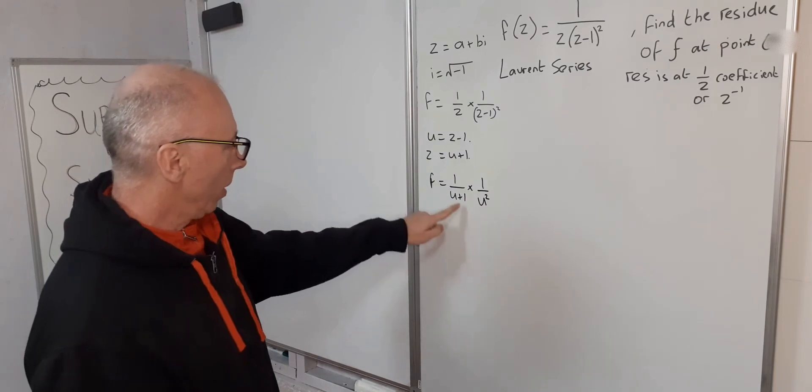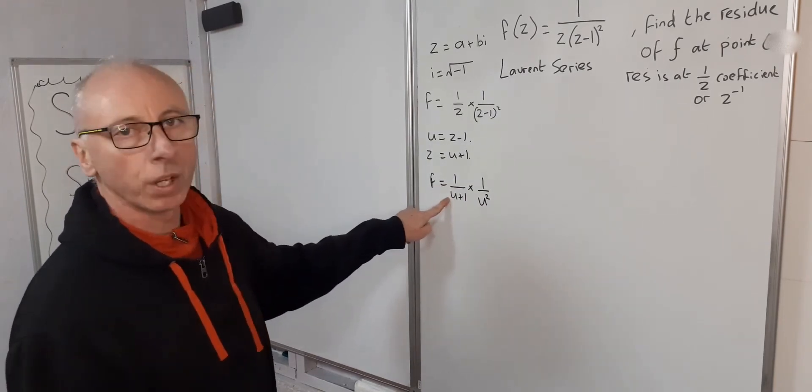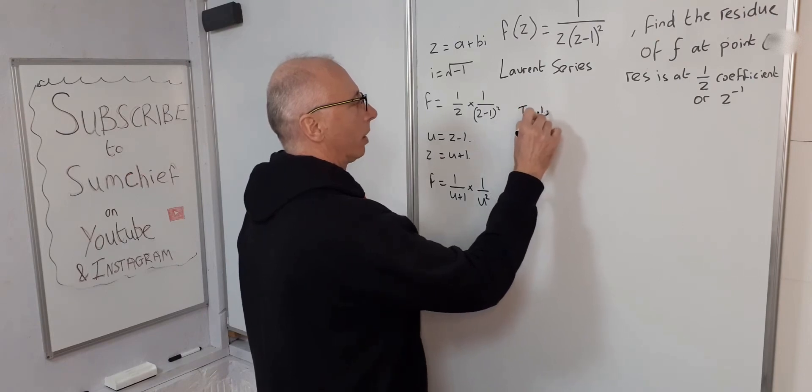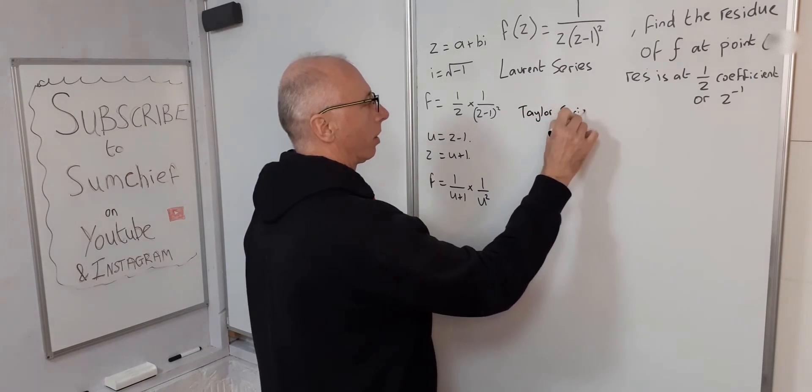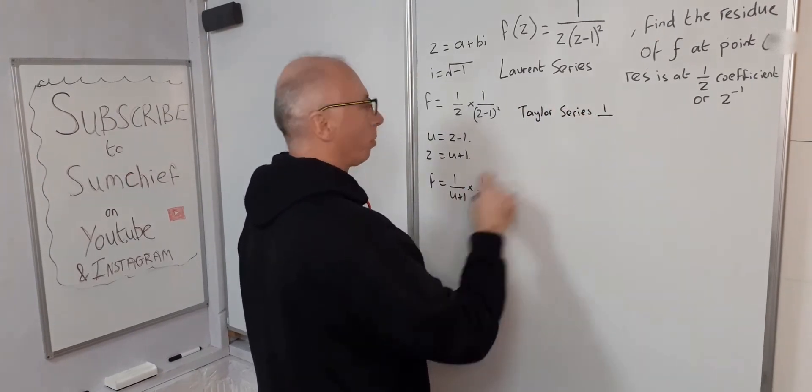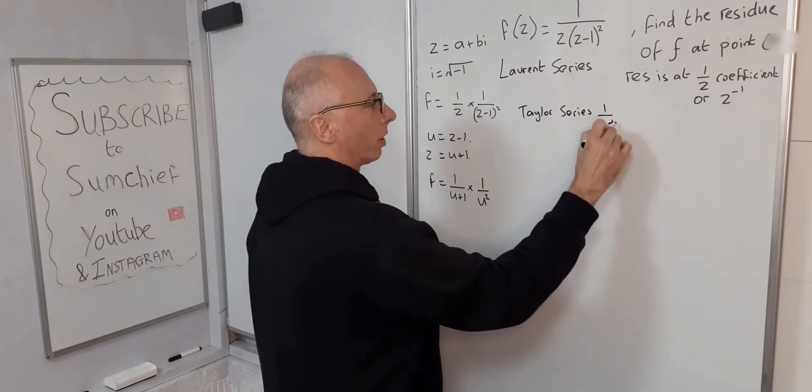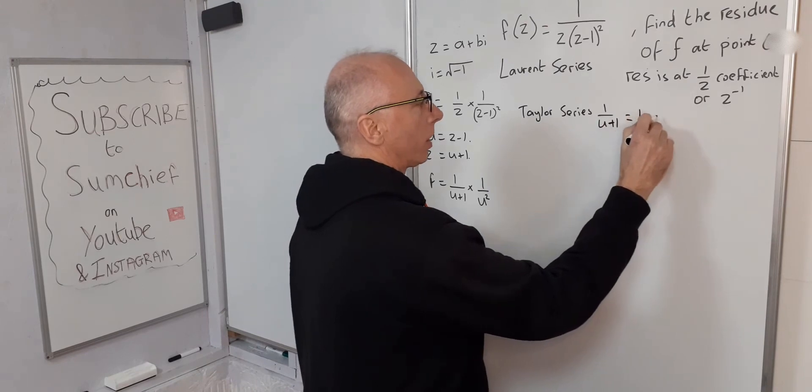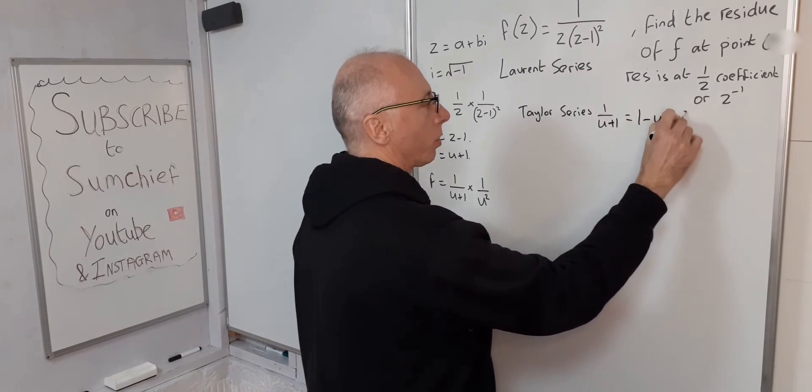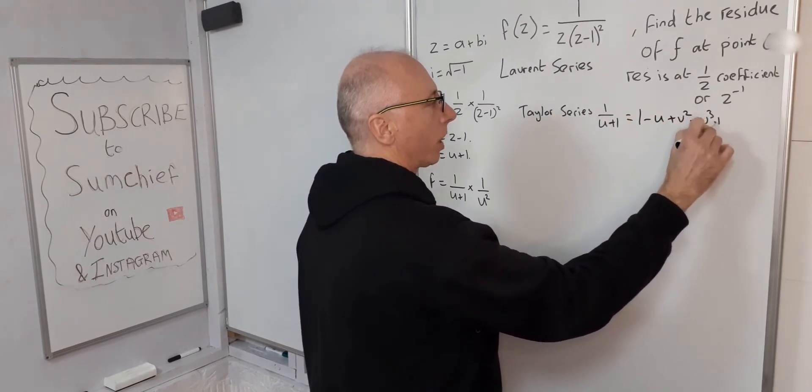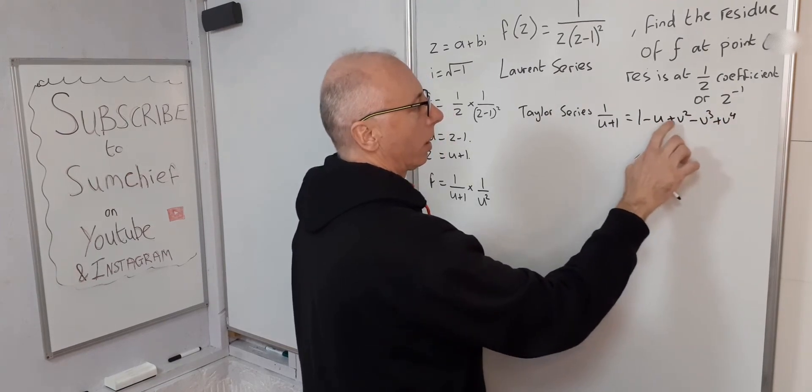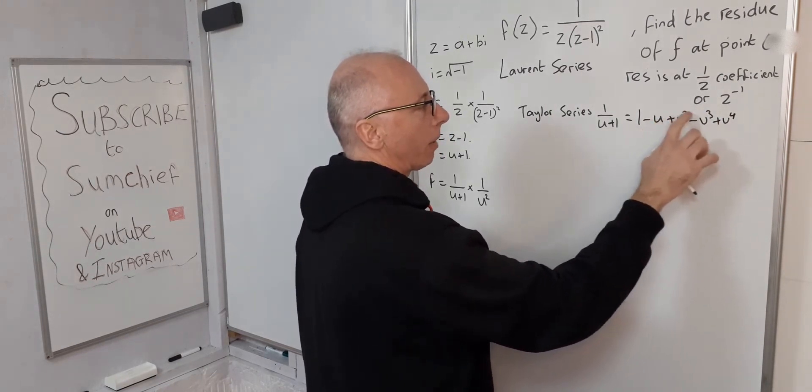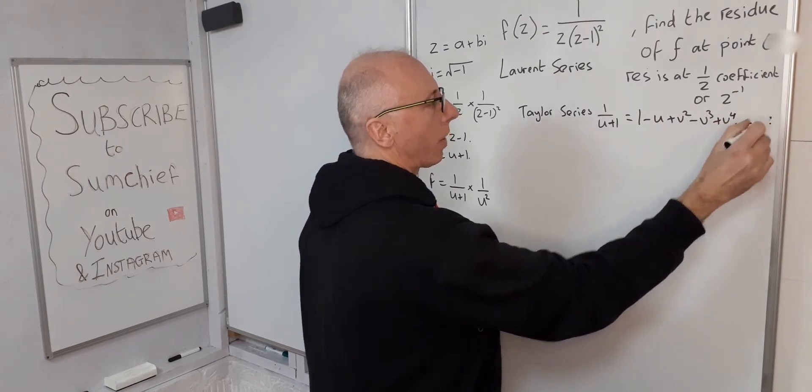1 over u squared we can work with, then we know a Taylor series for 1 over u plus 1. So let's just write that up here. Taylor series 1 over u plus 1: that is simply 1 minus u plus u squared minus u to the 3 plus u to the 4. Keep switching the negative to positive and the powers just keep going up one at a time and that goes on forever.